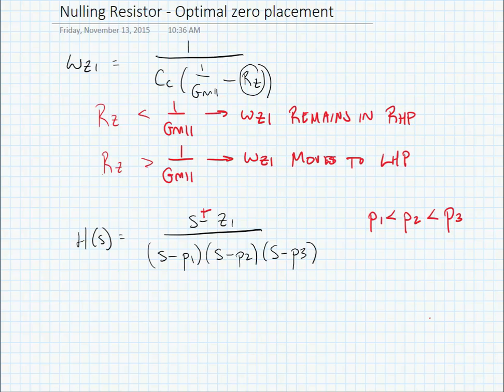If we want to provide the farthest spacing between two poles, then what we would want to do is cancel p2 with z1. In other words, we'd want to set z1 so that it was exactly the same frequency as p2. Let's look at how to do that.